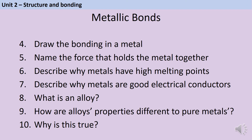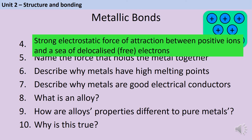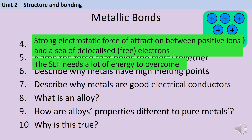In a pure metal you find regular rows of positive ions surrounded by a sea of delocalised electrons. These are held together by a strong electrostatic force of attraction between the positive ions and the negative electrons. Metals have high melting points because this strong electrostatic force of attraction requires a lot of energy to overcome. Metals are good electrical conductors because the delocalised electrons are free to move and carry charge through the metal.